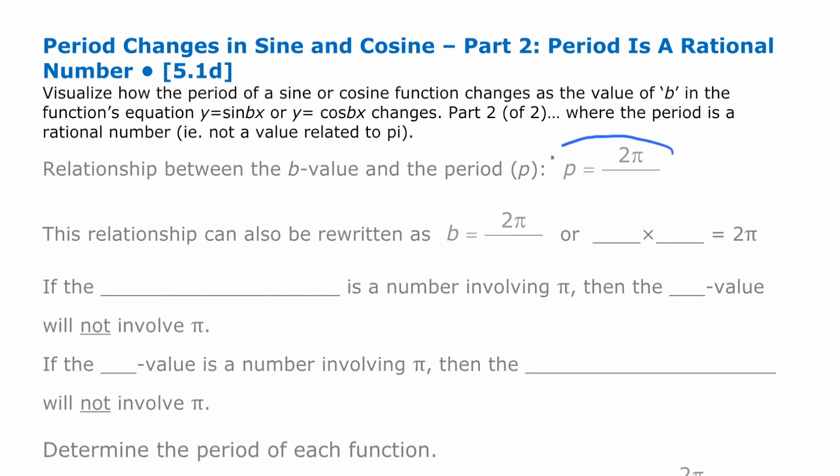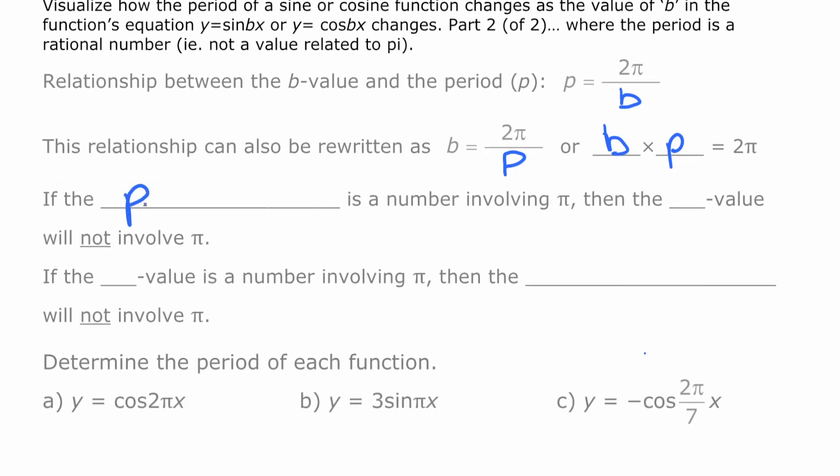So what we've seen here is our relationship between the period and the b-value: the period is 2π divided by the b-value. But now we've turned it around and said if the b-value is 2π over a number, that number is the period. Or you could rearrange that again. If you multiply both sides by p, you're going to end up with the b-value times the period is equal to 2π. Those two things will always multiply to 2π. And importantly, if the period is a number involving π, then the b-value will not involve π. And if the b-value is a number involving π, then the period will not involve π.